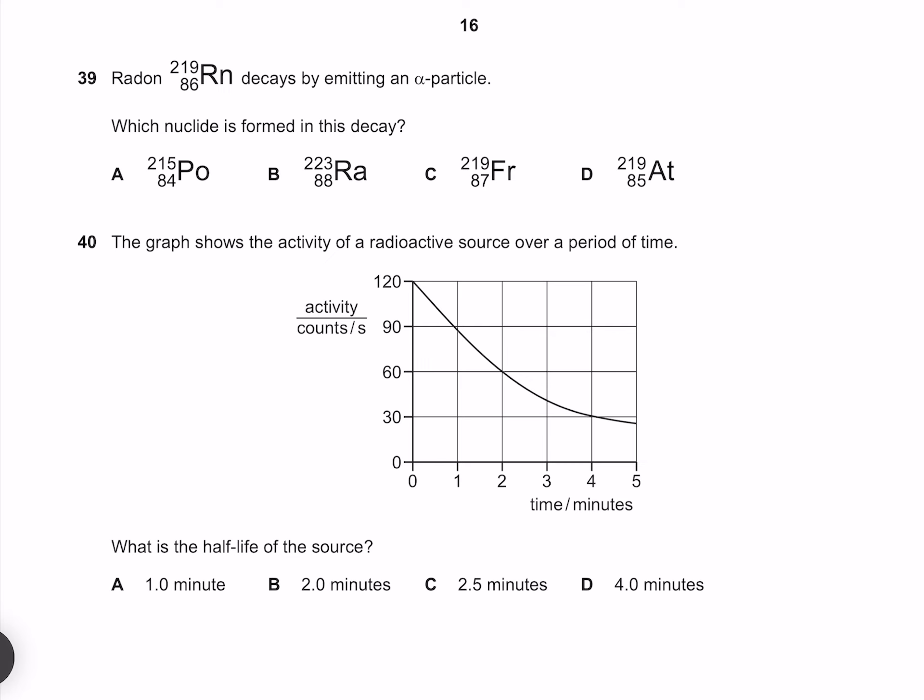Radon decays by emitting an alpha particle. Which nuclide is formed in this decay? If our radon 219/86 decays into some mystery element and an alpha particle. Our alpha particle has an atomic mass of 4 and an atomic number of 2. To keep our atomic mass the same on both sides, the atomic mass of our mystery element must be 215, 219 minus 4. And our atomic number must be 86 minus 2 which gives us 84. Therefore our answer must be polonium.